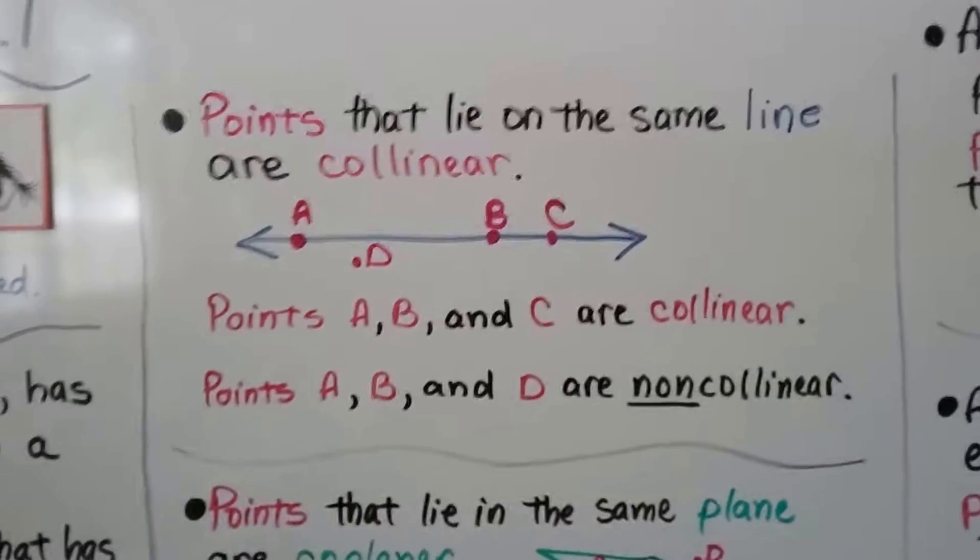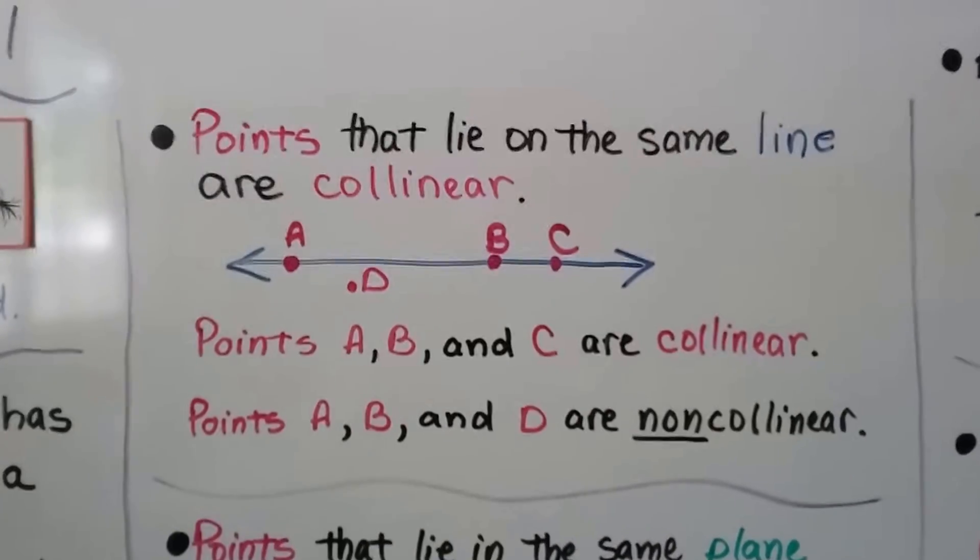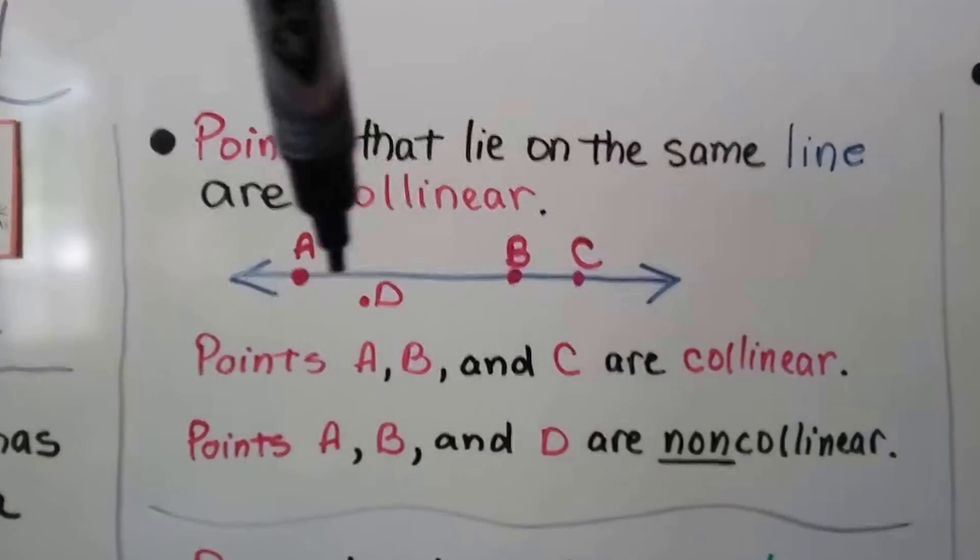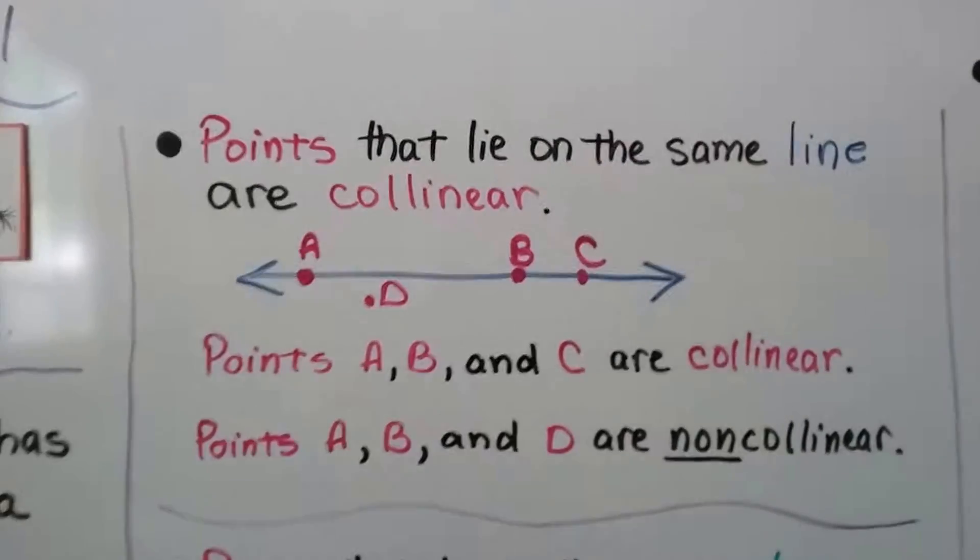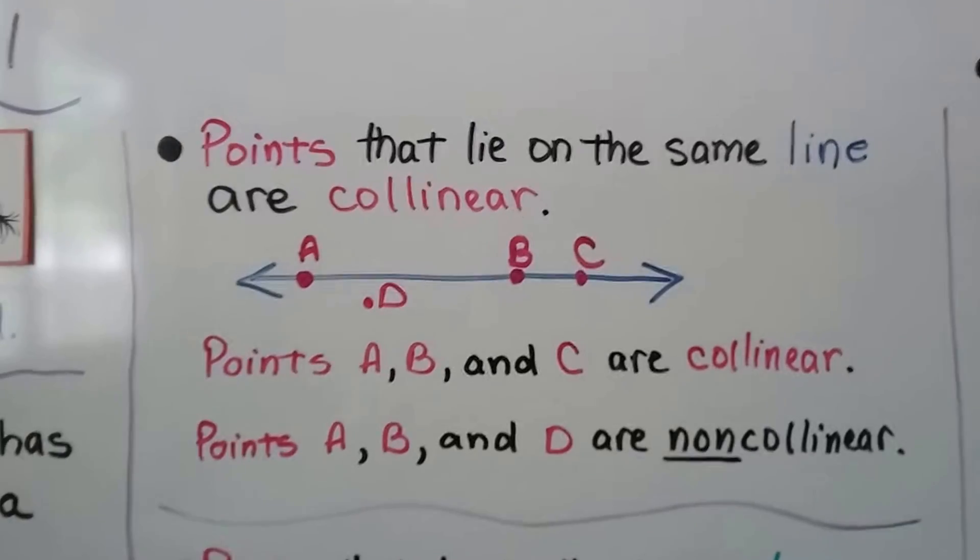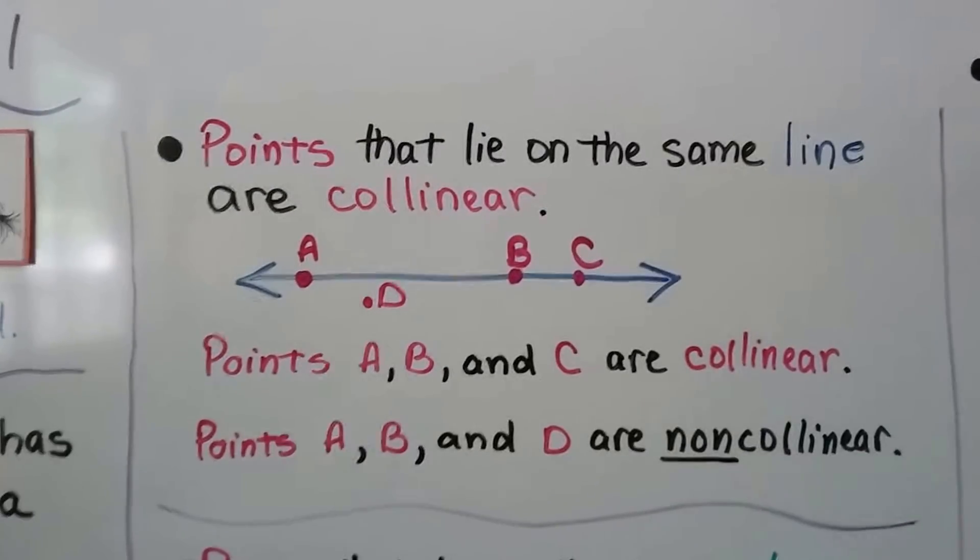Points that lie on the same line are collinear. Points A, B, and C are collinear. They're all on this blue line. But points A, B, and D are non-collinear. D is not on the line.